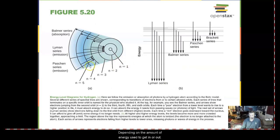Depending on the amount of energy used to get in or out will determine what spectral features those dark and bright lines we see.